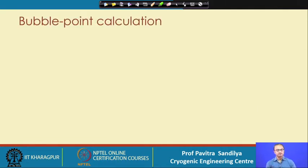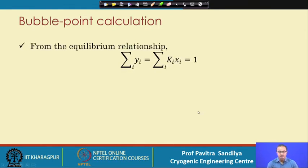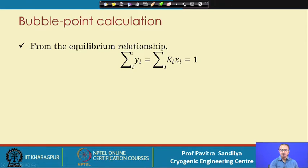Now let us go to the bubble point calculation. In this, we are talking about how a liquid will form a bubble and at what temperature or pressure. The liquid-phase composition x_i is given and y_i is unknown. We use the summation of y_i equal to 1, where y_i equals k_i times x_i is the equilibrium relationship. Substituting, we get the summation of k_i times x_i equal to 1. There are many ways of finding k_i; one of the ways is by Raoult's law, from which k_i equals P_i_sat divided by P.